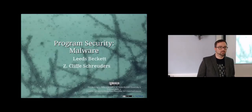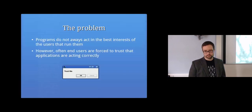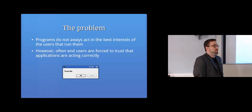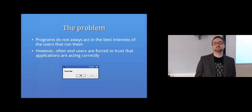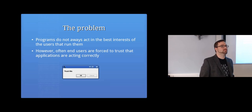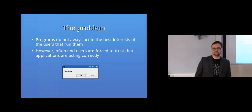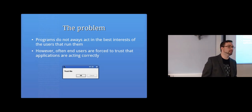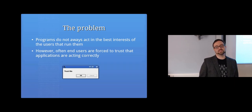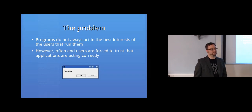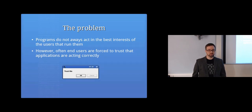Today we are talking about malware. The real problem is that software doesn't necessarily act in our own best interests. When you run a piece of software on your computer, you're often forced to trust that the program is doing what it says it's doing, whether you're using Windows or Android, where it asks whether you'll let it do what the author asked permission for. Unfortunately, that's not always the case.